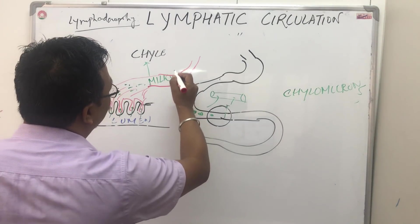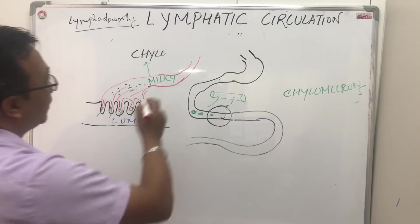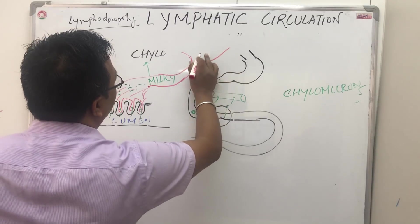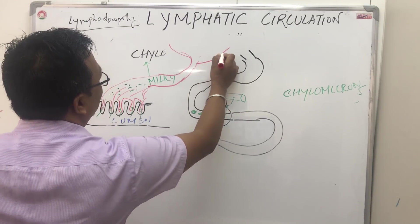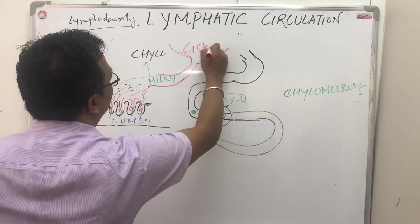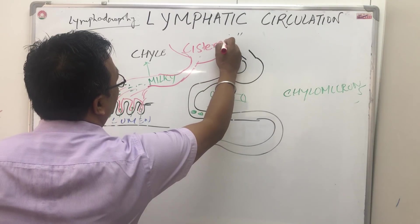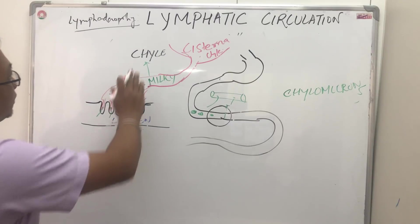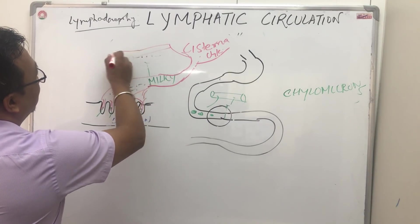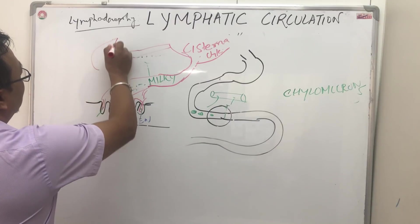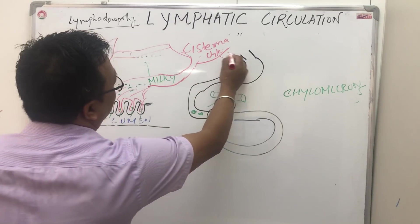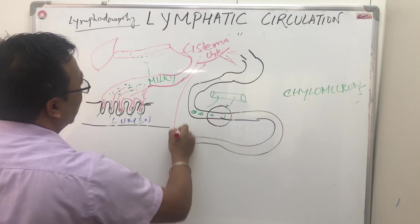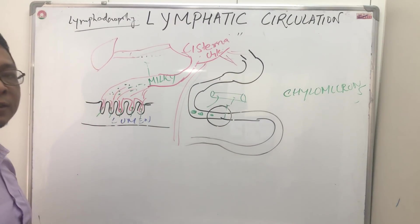This milky fluid is collected and moves to a big space called the cisterna chyli. The cisterna chyli collects lymphatic fluid from the liver, lower limbs, and different organs of the digestive system.